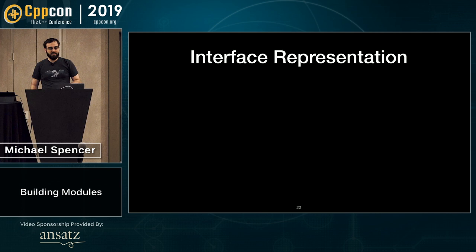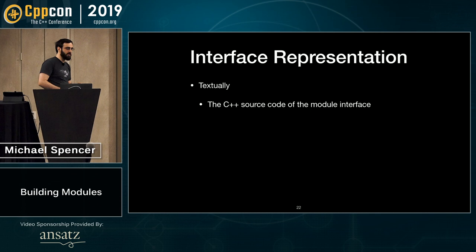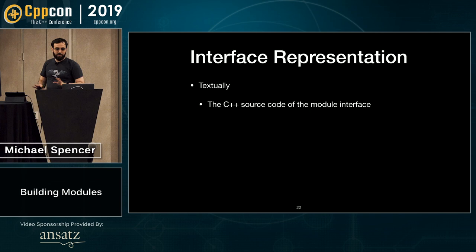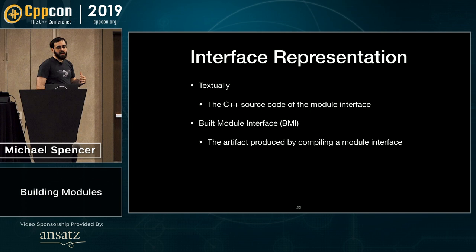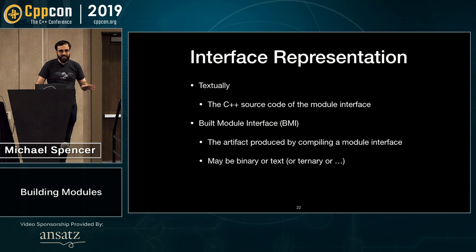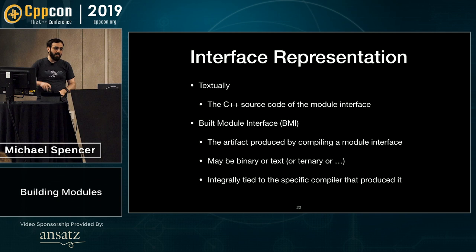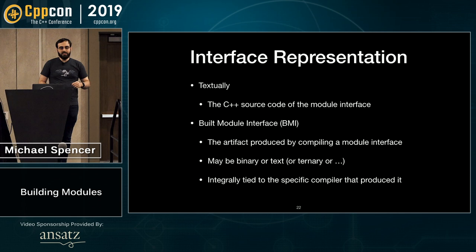How do we actually represent the module interface? The first and best way is textually. The C++ source code of the module interface is the most portable and readable form — it contains any ifdefs, any preprocessor directives, all your comments. But it's not the fastest to parse. So we also have a BMI, or built module interface. This is the artifact produced by compiling a module interface. It may be binary or text. The standard does not define this, and it is integrally tied to the specific compiler that produced it — not portable between compilers, and often not even portable between versions of the same compiler.